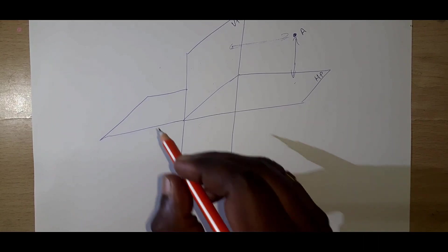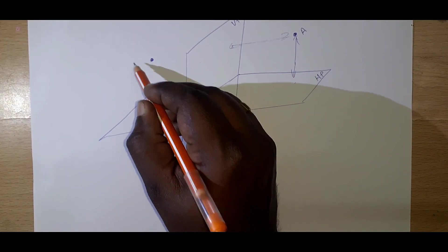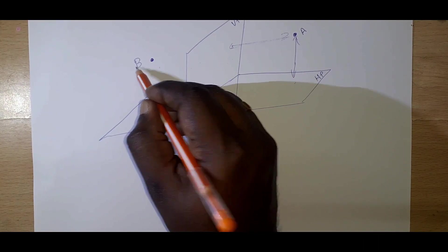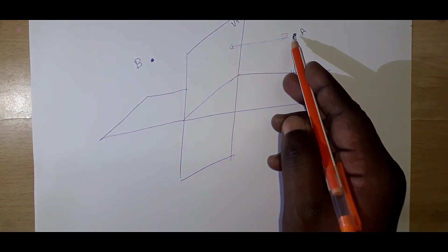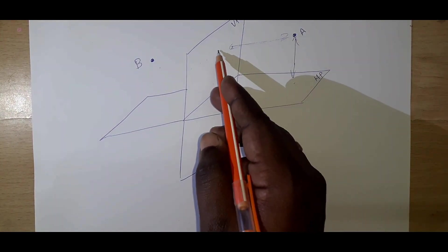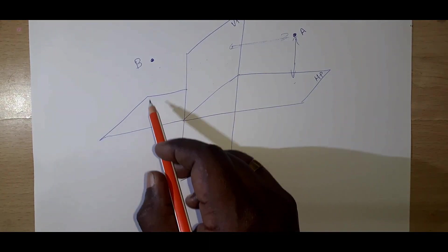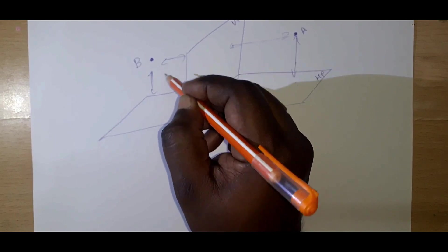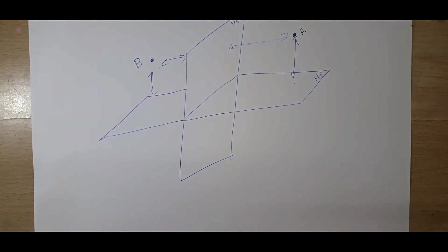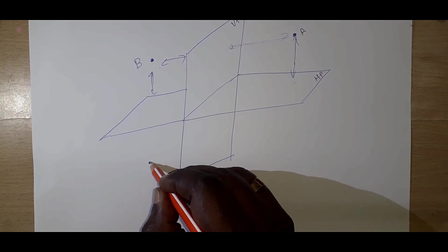Now for the second quadrant: the same object B is located above the horizontal plane — same as before — but behind the vertical plane, with some value. So the second quadrant is above the horizontal plane and behind the vertical plane.